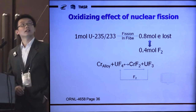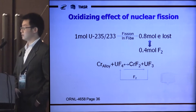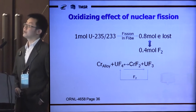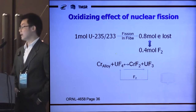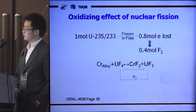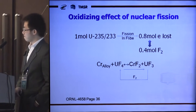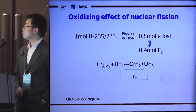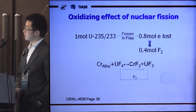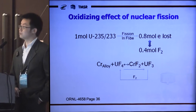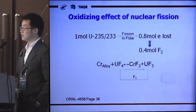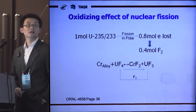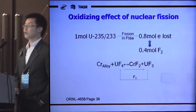This slide shows the oxidizing effect of nuclear fission. From the experience of MSRE, when one mole of uranium undergoes fission in the reactor, about 0.8 mole of electrons will be lost, causing an oxidizing effect. In other words, about 0.4 mole of fluorine gas can be produced when one mole of uranium is consumed in the reactor. This is a slight oxidizing effect, but it may cause corrosion reactions to go in a worse direction.